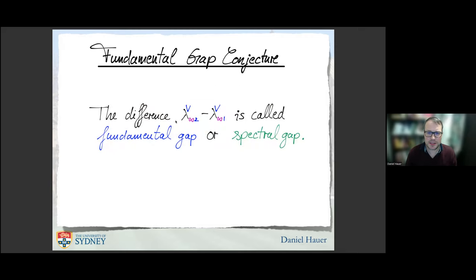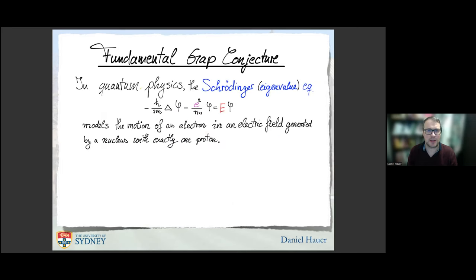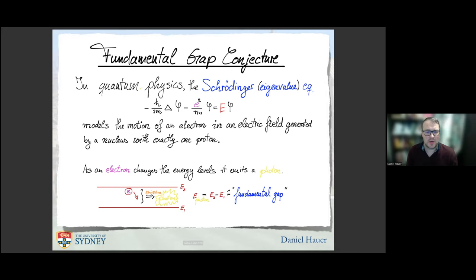This difference is a very special quantity called the fundamental gap or spectral gap. It appears in particular in quantum physics when you study the motion of an electron in an electric field generated by a nucleus with exactly one proton. When the electron changes energy levels, it emits energy, a photon. The maximal energy is measured by the difference of the two eigenstates, E1 and E2. You see here the eigenvalue equation of the Schrödinger operator.